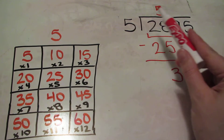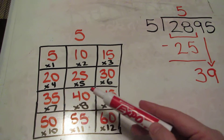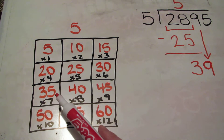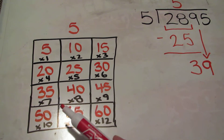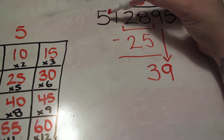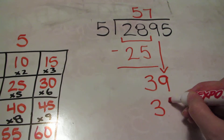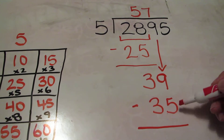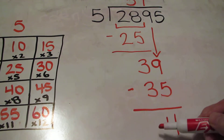Now I need to find how many times 5 goes into 39. I'm looking for a number as close as I can get to 39 without going over — here's 35. So I know that 5 goes into 39 seven times. I put my 7 up here. 5 times 7 is 35. I subtract that: 39 minus 35 is 4, and 3 minus 3 is 0.